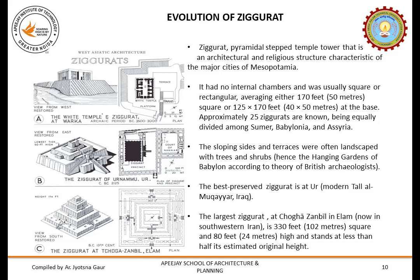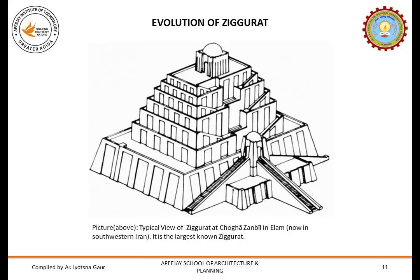Unlike the Egyptian pyramids, the Mesopotamian ziggurats were smaller. The Egyptian pyramids were generally 200 feet or more in height, while ziggurats averaged about 170 feet. They had a square base and approximately 25 ziggurats are known, being equally divided among Sumer, Babylonia and Assyria. According to some British archaeologists, the sloping terraces were often landscaped with trees and shrubs — perhaps believed to be the origin of the Hanging Gardens of Babylon. The best preserved ziggurat is at Ur in modern day Iraq. The largest ziggurat is at Choga Zanbil in Ilam, present day Iran, about 330 feet square and 80 feet high.